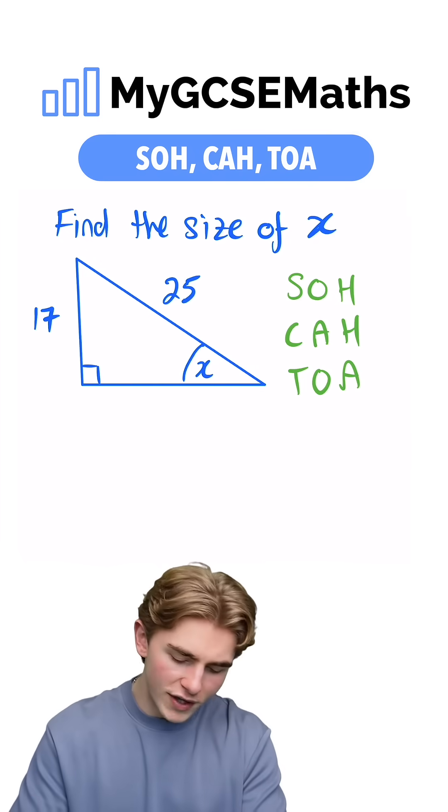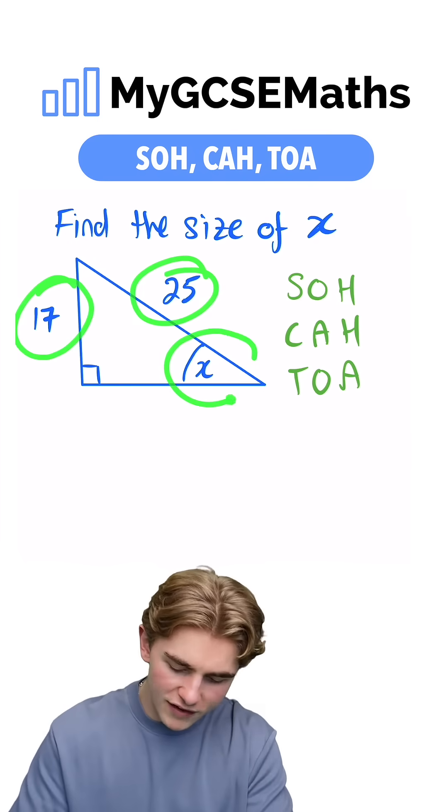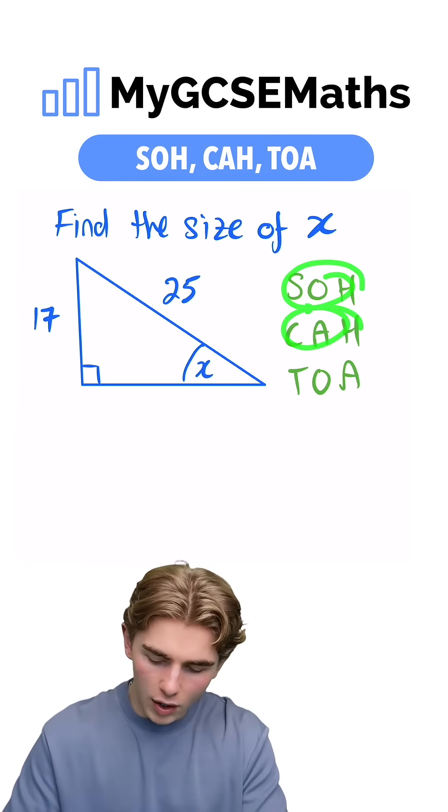We're dealing with a right angle triangle. We're given two side lengths and asked to work out an angle. So we know we're going to be using either SOH, CAH, or TOA.